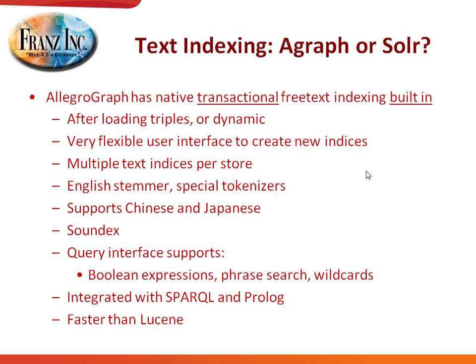I first want to say that if you're just doing work with triples and text, you don't always have to use Solr, because we have a really good transactional free text indexer built in. For example, you can first load your triples and then afterwards determine what kind of text indices you want. Or you can beforehand say you want free text indexing for these predicates, and then they will all be indexed while loading the triples — so completely dynamic.